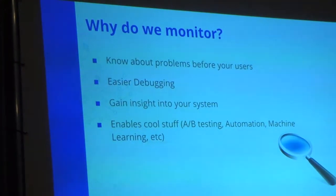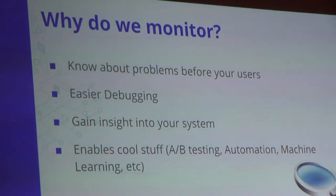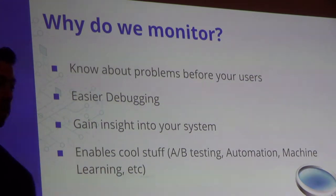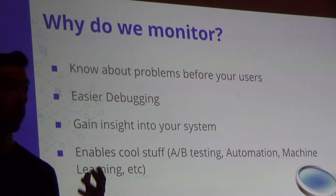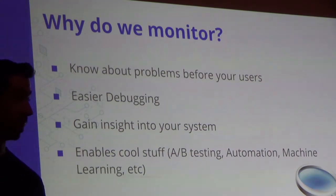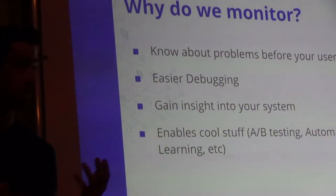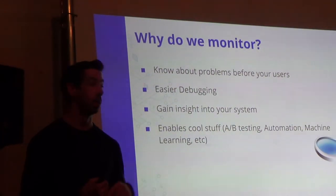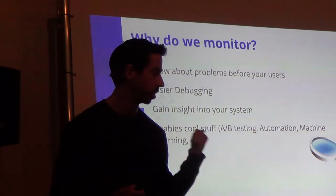One of the main things we think about is knowing about problems in our system before our actual end users do. In our case, if a customer calls and says they can't place an order, we're already in a really bad state — losing money, losing face, and developers have to scramble under stress to figure out what's going on. If there's an issue or potential issue on our platform, we want to know about it a lot earlier than our customers find out.